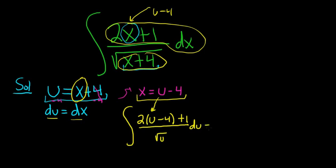And now we should be able to work through this just by rewriting things and breaking it up. So this is the indefinite integral. 2 times u is 2u. 2 times negative 4 is negative 8. And then we still have the 1. And on the bottom, we have the square root of u. I'm going to go ahead and write this as u to the 1 half because we're going to break it up in a minute.